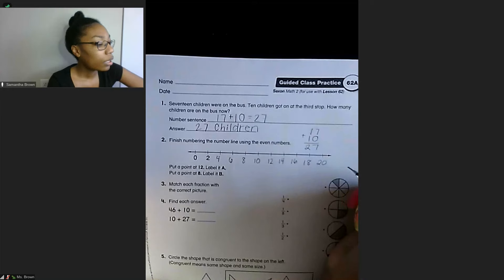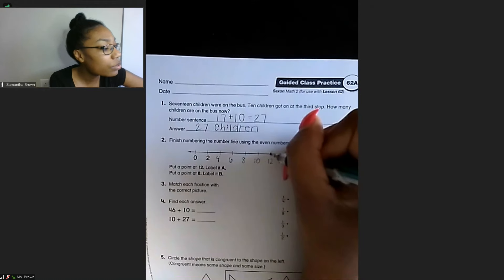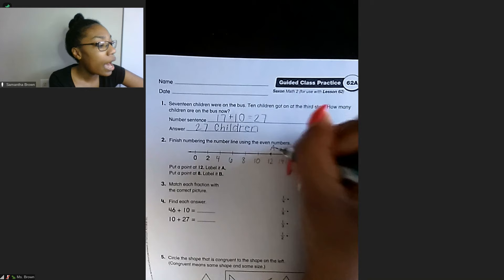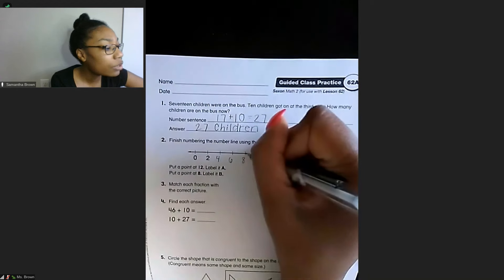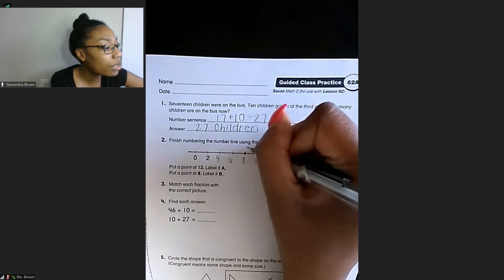And now the direction says put a point at 12, label it A. So if you put a point here at 12, I'm going to put A. And then it says put a point at 8, label it B. So I'm going to draw a point here and then put B.